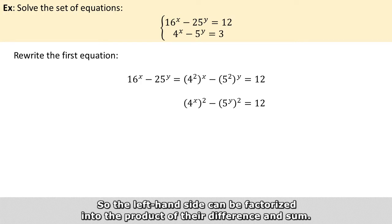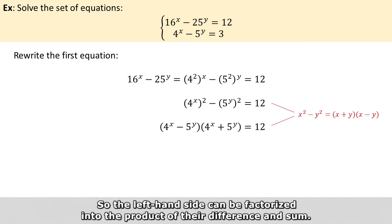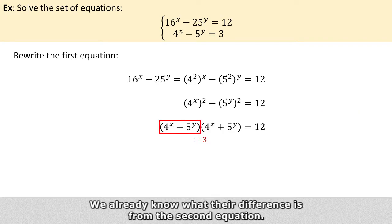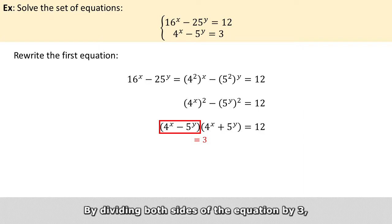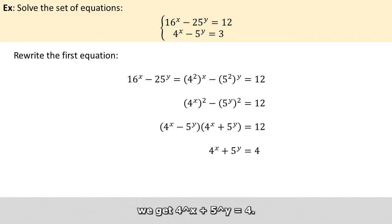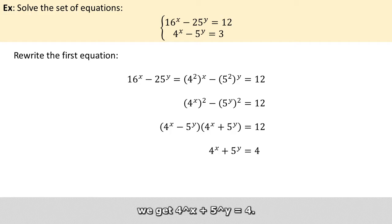So the left hand side can be factorized into the product of the difference and sum. And we already know what the difference is from the second equation. By dividing both sides of the equation by 3, we get 4 raised to the power of x plus 5 raised to the power of y equals 4.